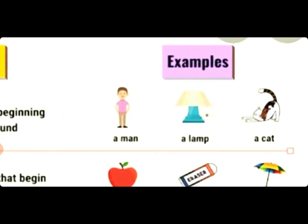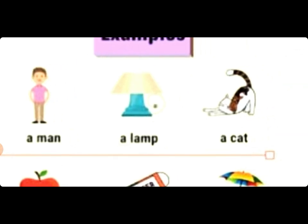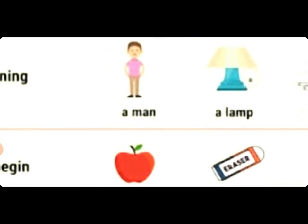For example, 'a man'. 'Man' starts with 'M', and 'M' is a consonant letter, so we say 'a man'. Another example: 'a lamp'. 'Lamp' starts with 'L', which is a consonant letter, so we use 'a'. Next, 'a cat'. 'Cat' starts with 'C', which is a consonant letter, so we again use 'a'. So: a man, a lamp, a cat.